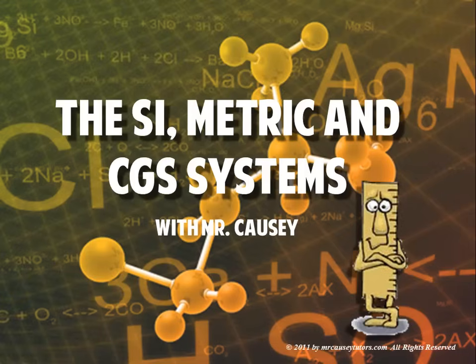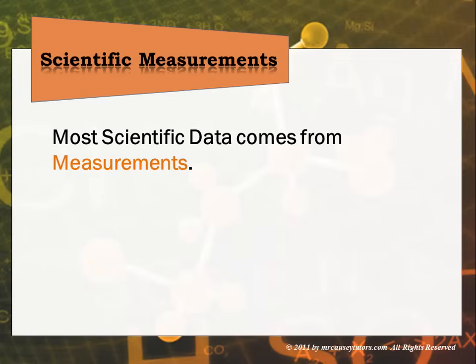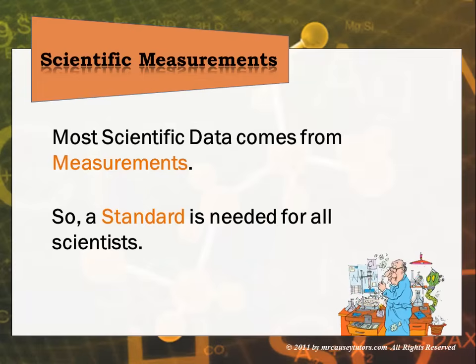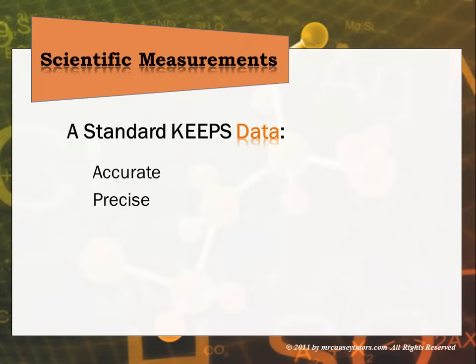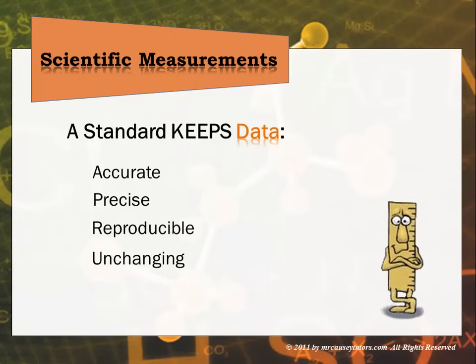Measurements are very important to scientists because so much of our work and data deals with measurements and quantitative units, so we need to understand the measuring system that scientists use. Most scientific data comes from measurements, so a standard is needed for all scientists. A standard keeps data accurate, precise, reproducible, and unchanging. Scientists need to be able to reproduce the data of other scientists, and having a standard makes this easy and convenient.